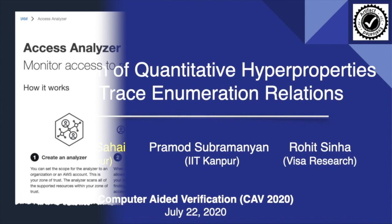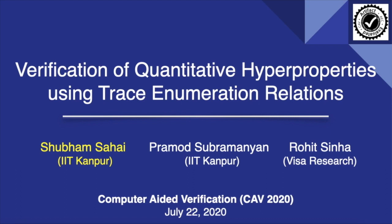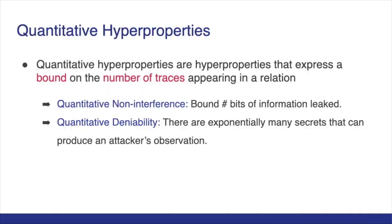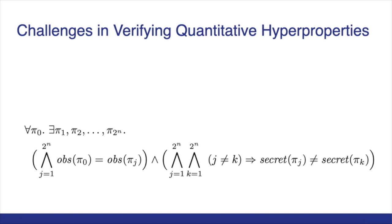We present a novel technique for the verification of quantitative hyperproperties. You may be familiar with hyperproperties like secure information flow, which is essentially a two-safety property. Quantitative hyperproperties take hyperproperties one step further and allow us to express bounds on the number of traces, enabling us to prove properties such as quantitative non-interference and quantitative deniability. Consider the following example, which states that for every trace of the system, there must exist exponentially many other traces with identical observations and pairwise different secrets. This formula has exponential size and quantifier alternation, making it very difficult and challenging to verify.